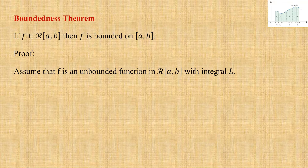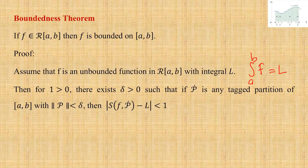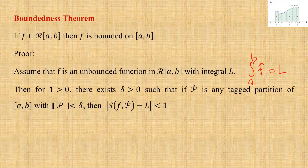We will assume that f is a Riemann integrable function but it is not bounded. Assume that f is an unbounded function in R[a,b]. If it is in R[a,b] it will have an integral value — call it L. Now, by the definition of Riemann integrability, for every ε > 0 there exists δ > 0 such that whenever we take a tagged partition of norm less than δ, the corresponding Riemann sum satisfies |S(P̃) − L| < ε.